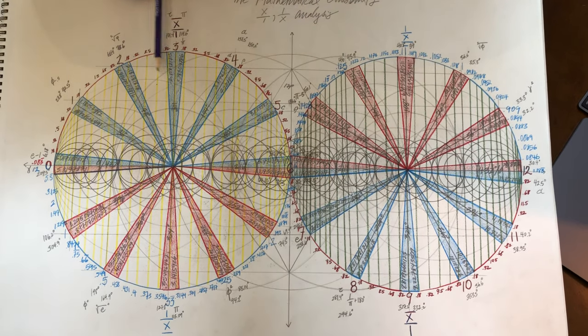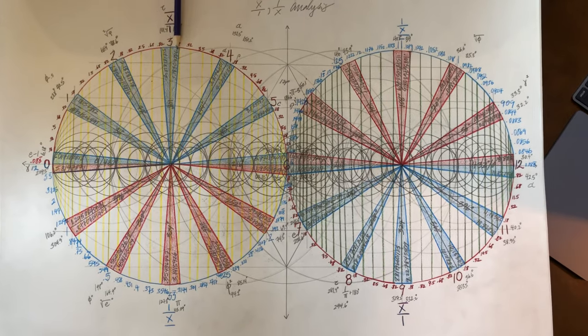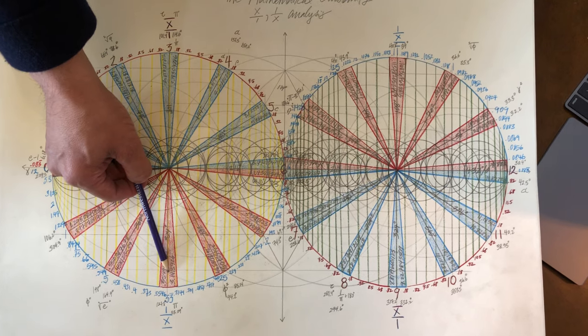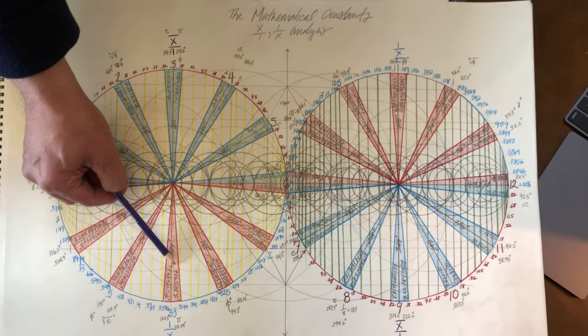These boundary conditions, for example, would be this is 1 over pi times 10, 3.183, and then pi would be down here. It's mirrored opposite, so it's 1 over x, 3.14159.